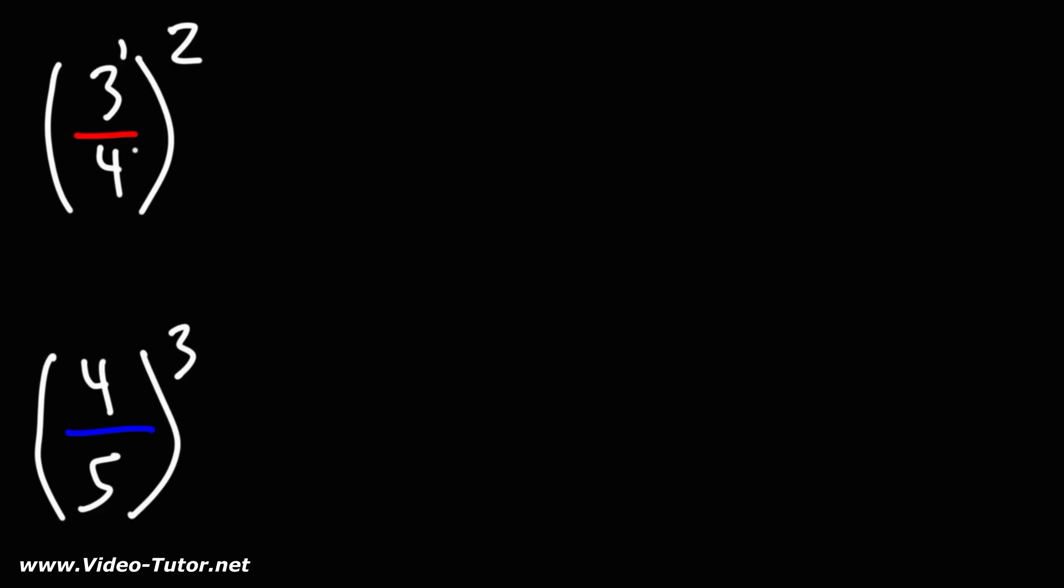What we could do is we could multiply each of these exponents by 2. If you don't see a number, the exponent is a 1. Anytime you raise one exponent to another, you can multiply them. So this is 3 squared over 4 squared.